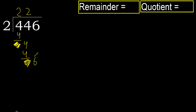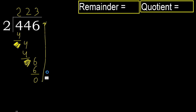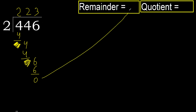Next, eliminate 6. 2 multiplied by 4 is 8, which is greater. 2 multiplied by 3 is 6, which is not greater. Subtract. Next, there is no number, therefore finish.